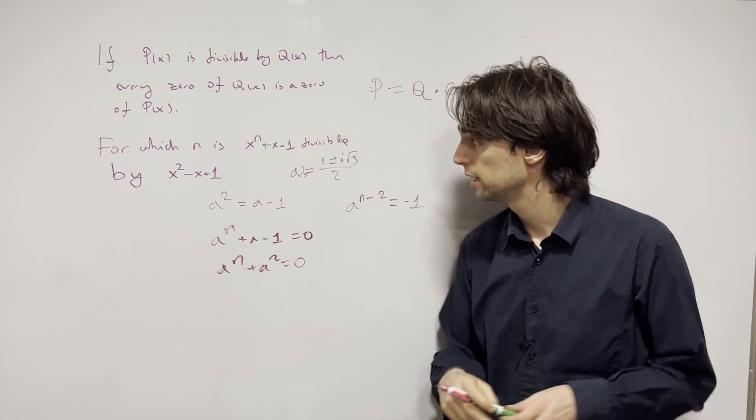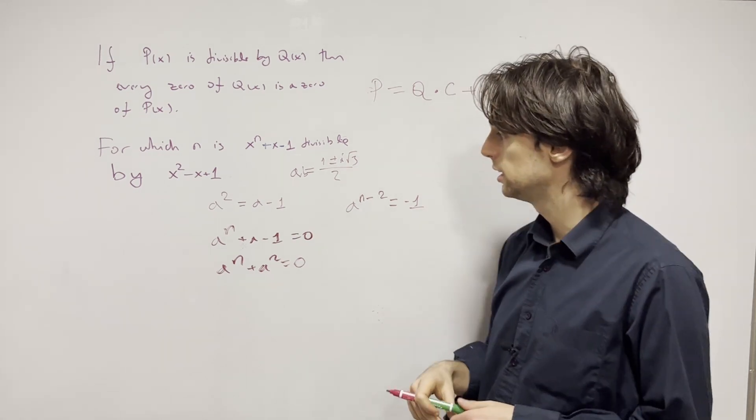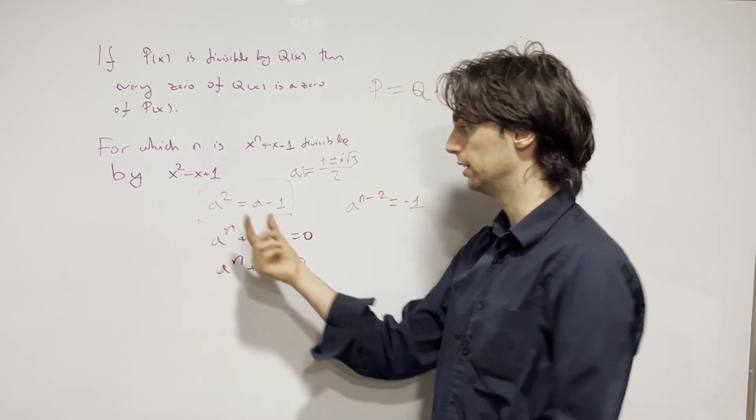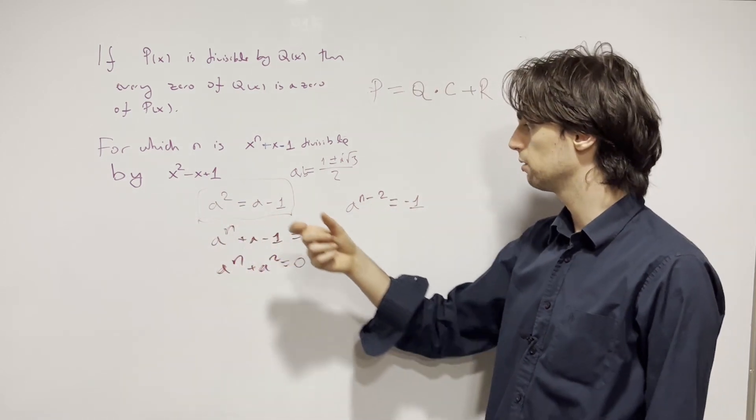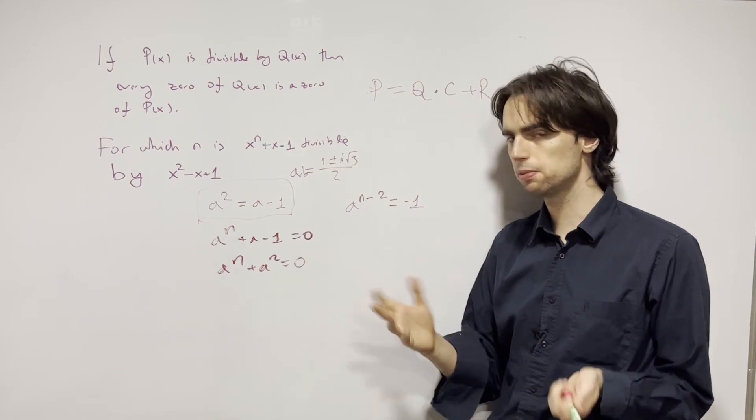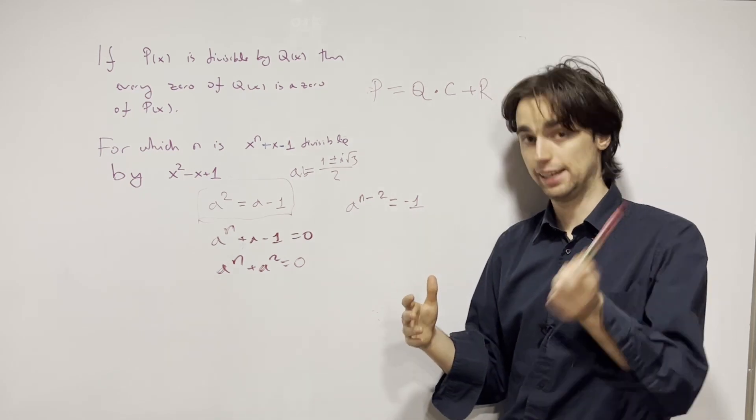Now my question for you is, if a is a complex number such that this is true, for which n is a^(n-2) equal to negative one? Pause for five minutes and figure that out. Here's the idea.